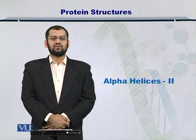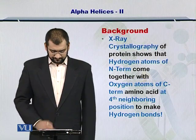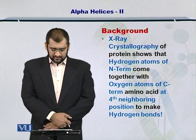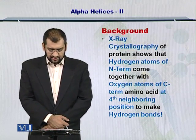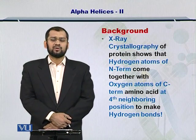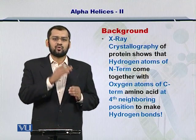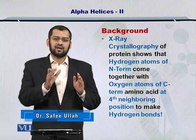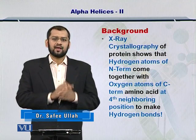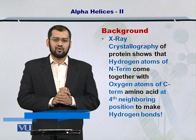Dear students, in this module I am going to continue elaborating on alpha helices for you. The X-ray crystallography of proteins shows that the hydrogen atoms of N terminus come together with the oxygen atom of the C terminus at every fourth position from the N terminus and they make a hydrogen bond. As a result of this hydrogen bonding, alpha helices are formed.